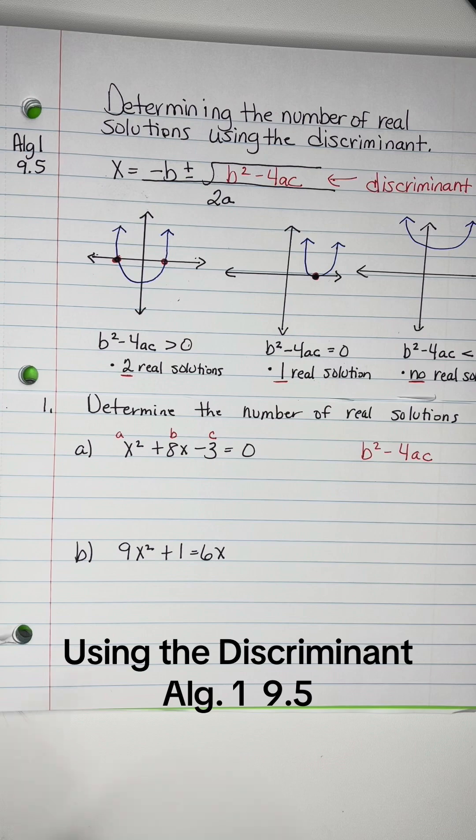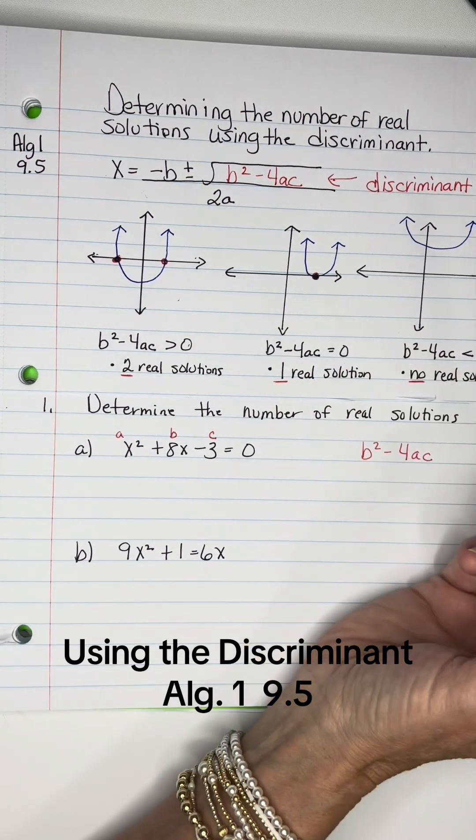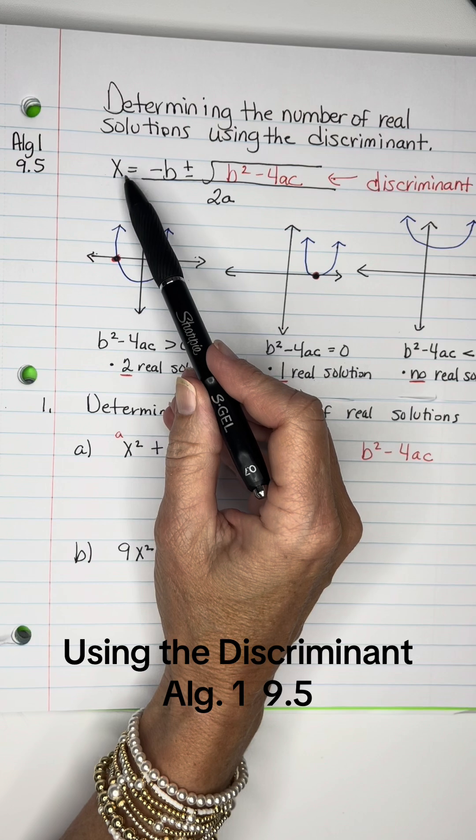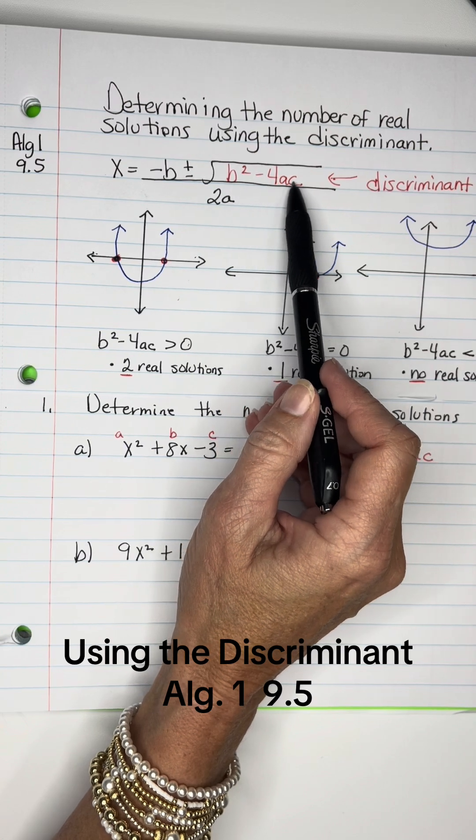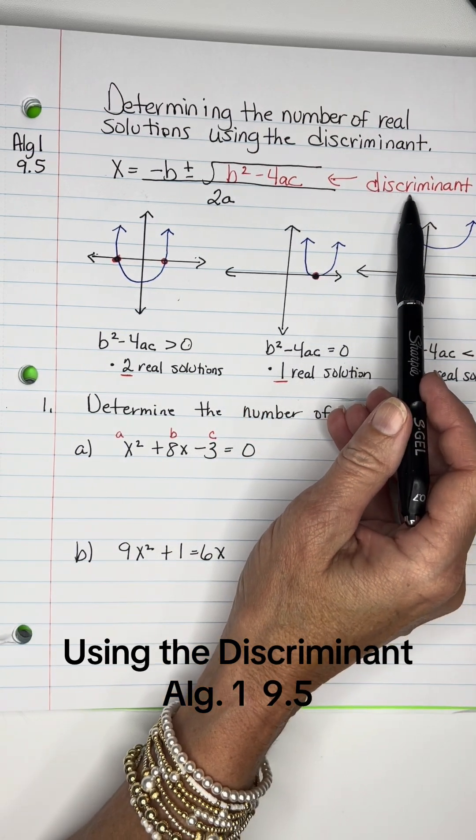Determining the number of real solutions using what we call a discriminant. In your quadratic formula that we just got through studying, the part under the radical sign, the B squared minus 4AC, is what we know as the discriminant.